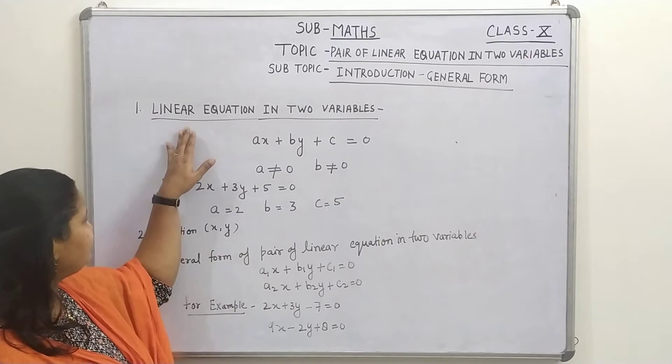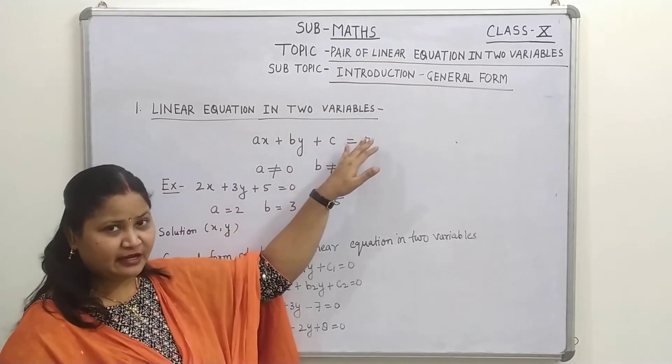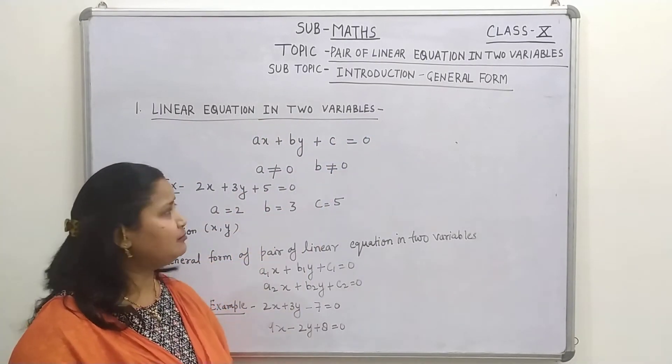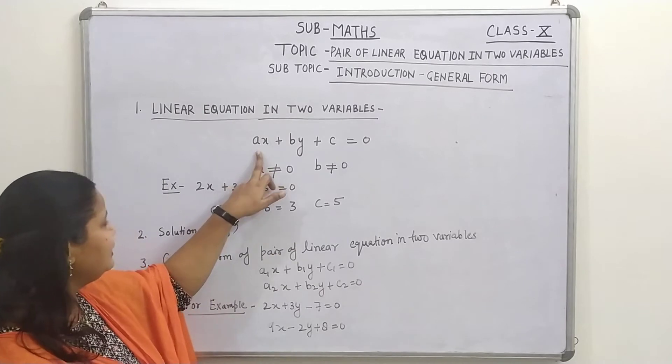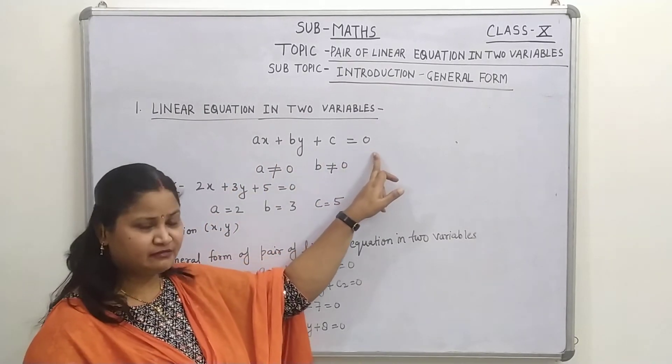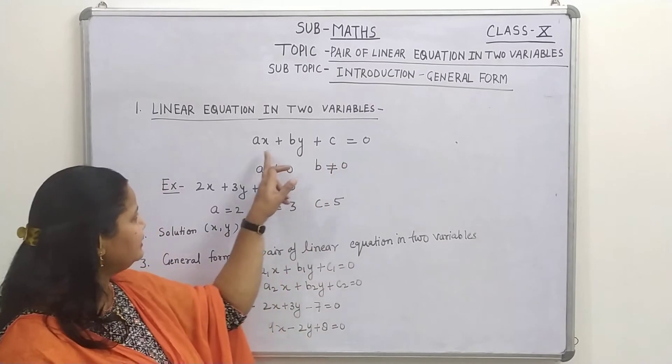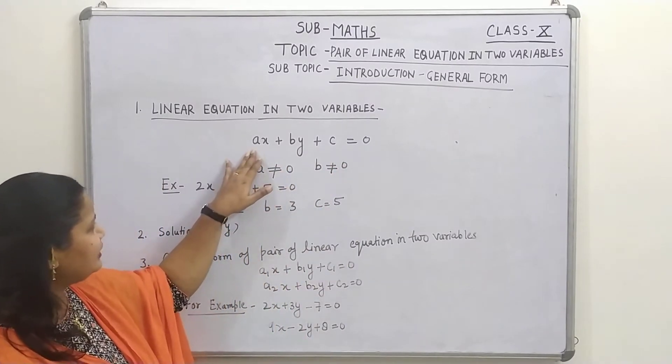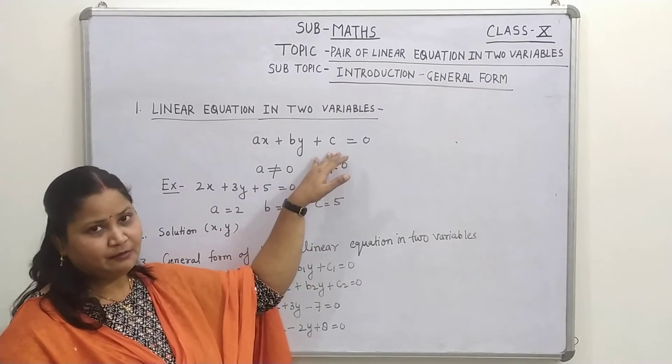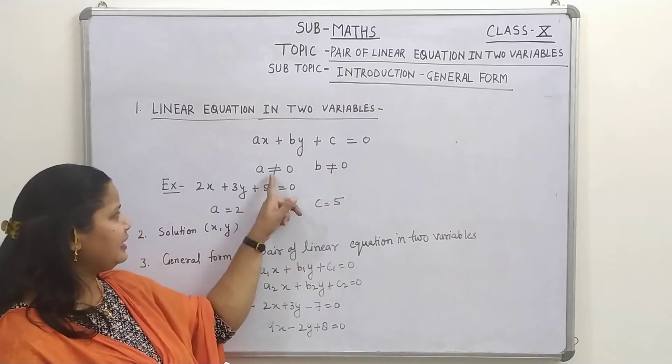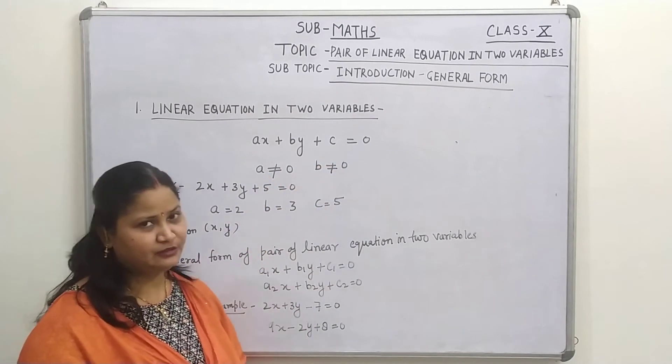Children, first of all, linear equation in 2 variables. We will talk about the general form of linear equation in 2 variables. It was AX plus BY plus C equals to 0 as you have studied in 9th class. Where A, B and C must be real numbers and A and B must not be equal to 0.